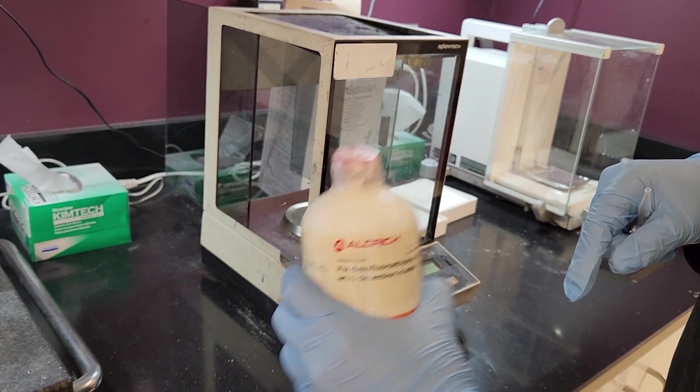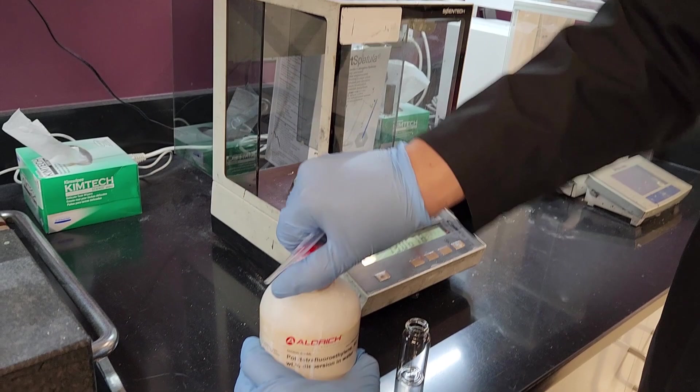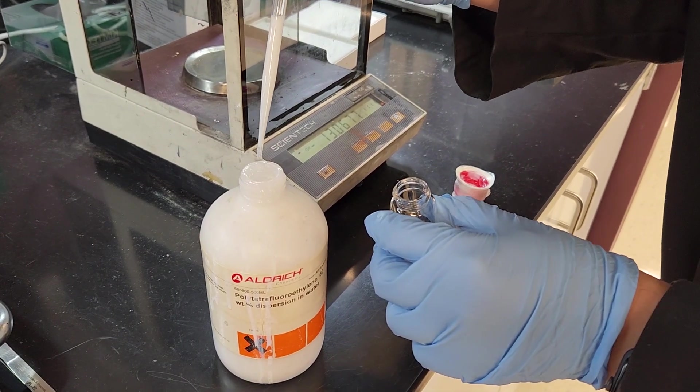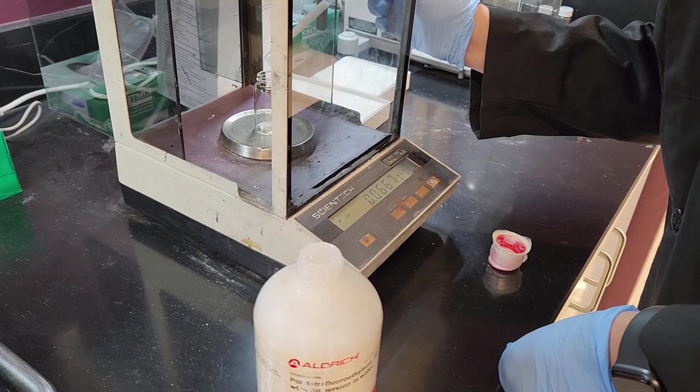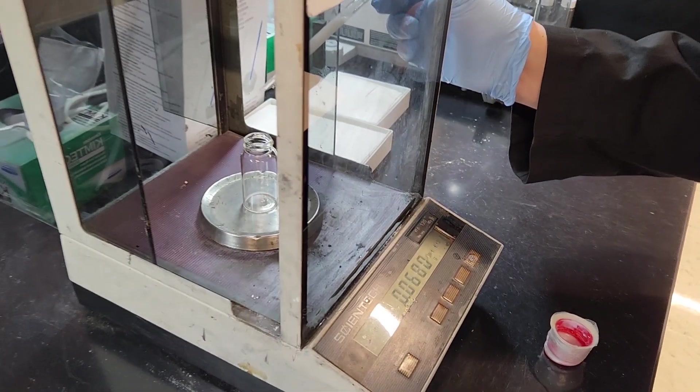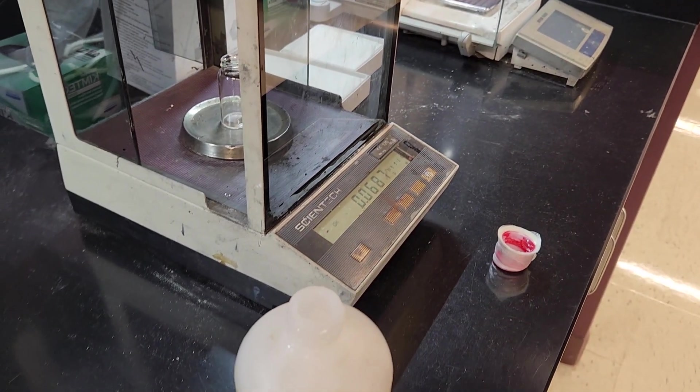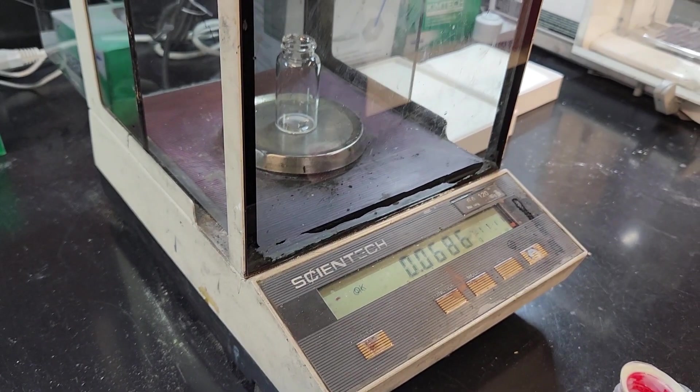We shake the PTFE bottle to get a more homogeneous dispersion. A few drops of PTFE already gave us more than 0.06g PTFE dispersion. That's more than what we wanted already so we stopped here. The mass stabilized around 0.0686g.